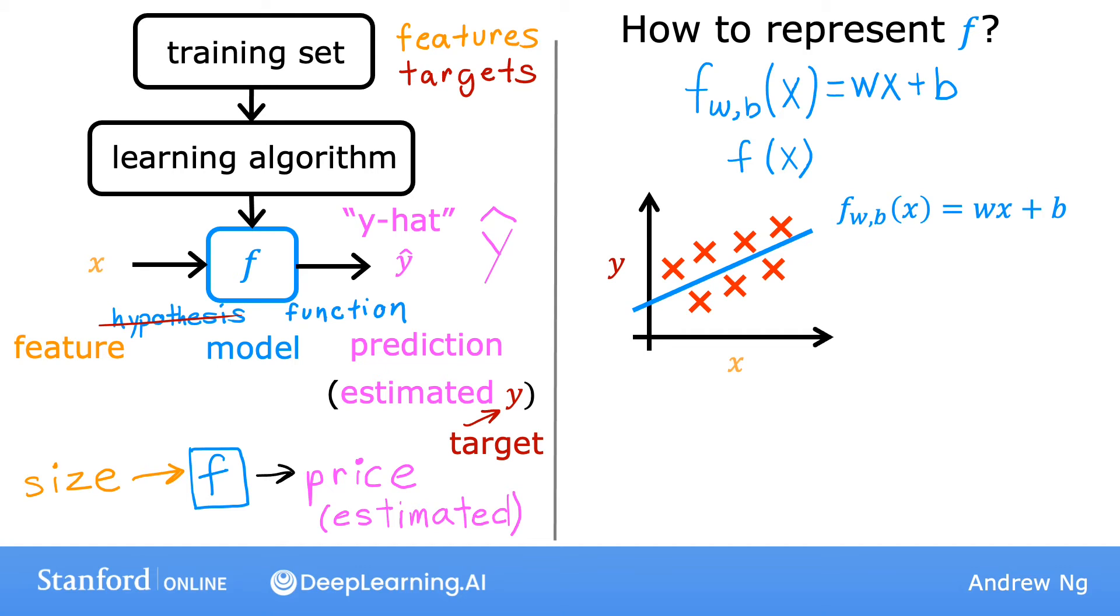This straight line is the linear function f_w,b of x equals w times x plus b. Or, more simply, we can drop w and b and just write f of x equals wx plus b. Here's what this function is doing. It's making predictions for the value of y using a straight line function of x. So you may ask, why are we choosing a linear function, where linear function is just a fancy term for a straight line, instead of some nonlinear function like a curve or a parabola?